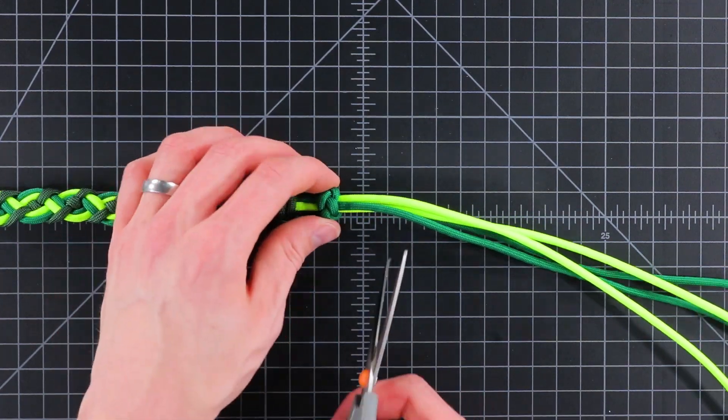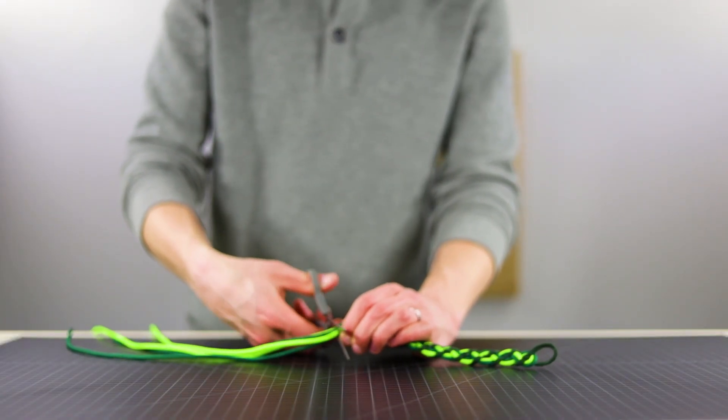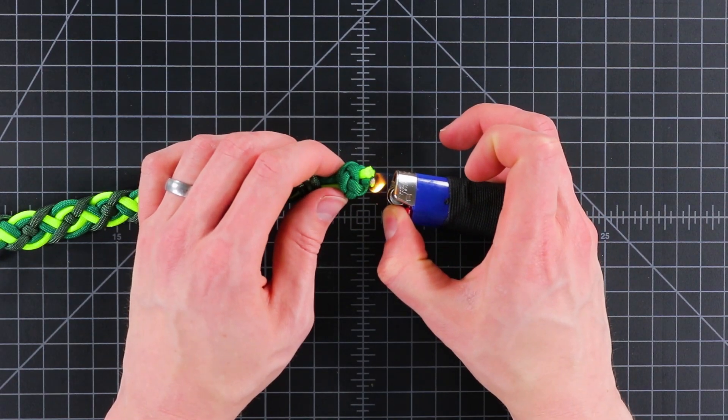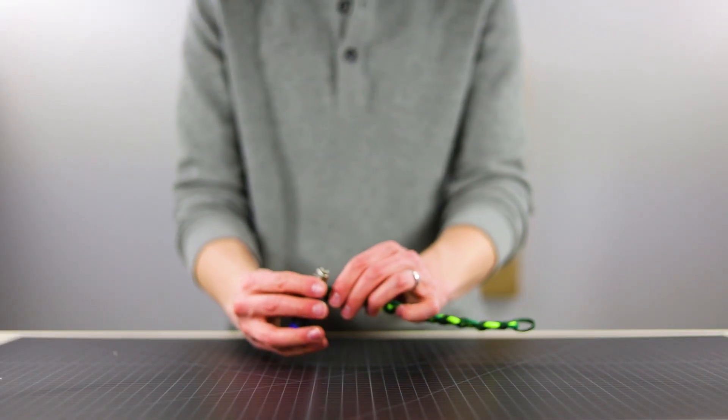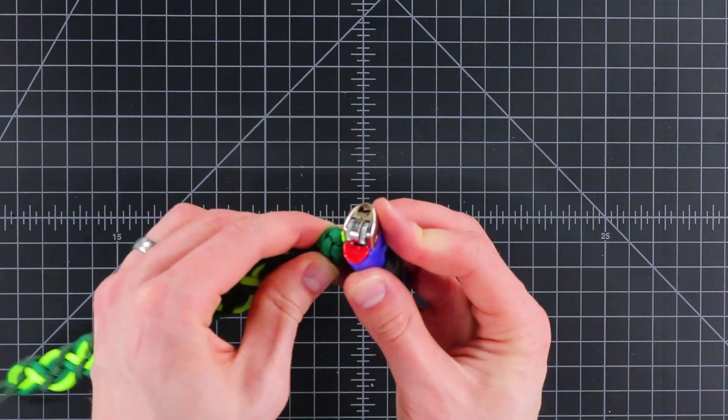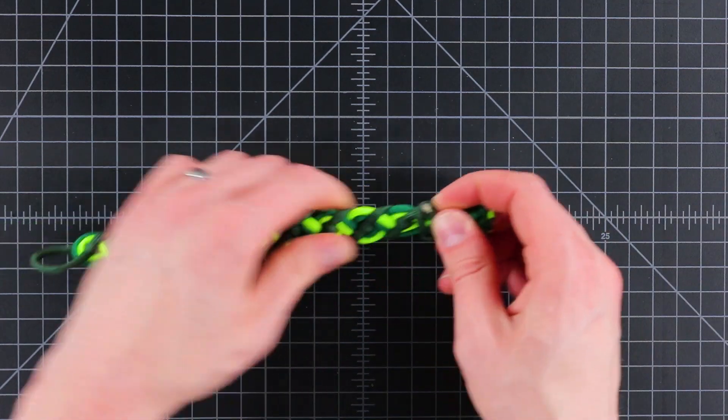But now that we're done, I'm going to just cut all of those cords fairly close to that knot. And then we're just going to melt all of them down at the same time. And then just kind of roll that into the knot. And that makes the end wider so that it's not going to pull through. But there is our bracelet.